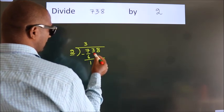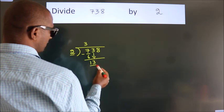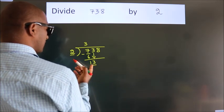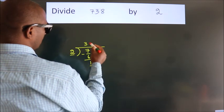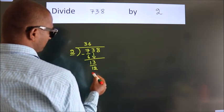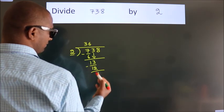After this, bring down the beside number. So 3 down, so 13. A number close to 13 in the 2 table is 2 times 6, 12. Now we subtract and get 1.